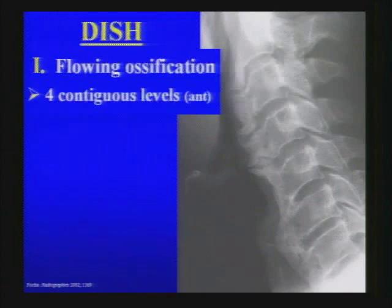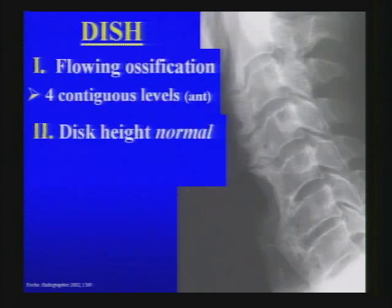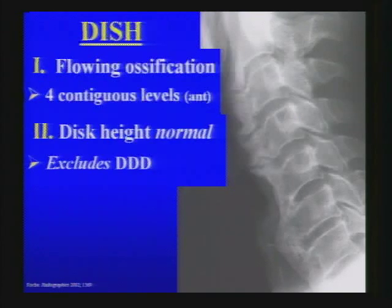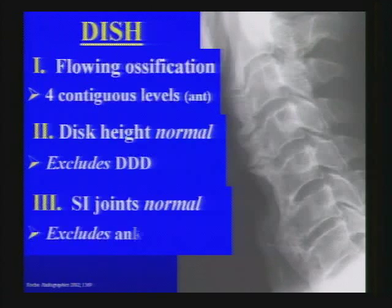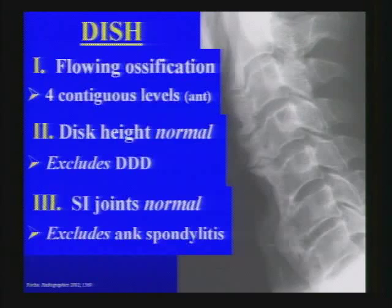The second diagnostic criterion for DISH is that the disc height is normal, which differentiates this marginal perivertebral ossification from that seen in degenerative disc disease. Finally, the SI joints should be normal, distinguishing DISH from seronegative spondyloarthropathies like ankylosing spondylitis, which can also cause perivertebral ossification.